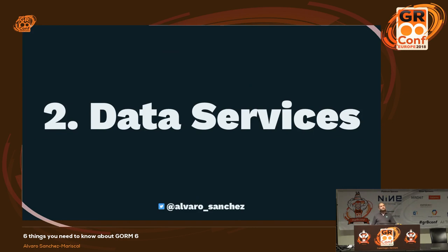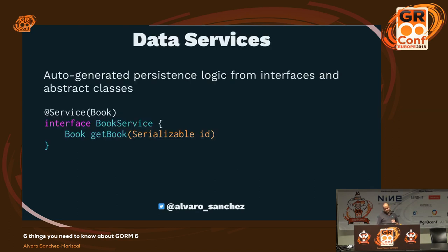I've mentioned the data service. How many of you know what a data service is? Only one person — cool. This was introduced in GORM 6.1, and it's a really cool feature. Data services are auto-generated persistence logic from interfaces or abstract classes.